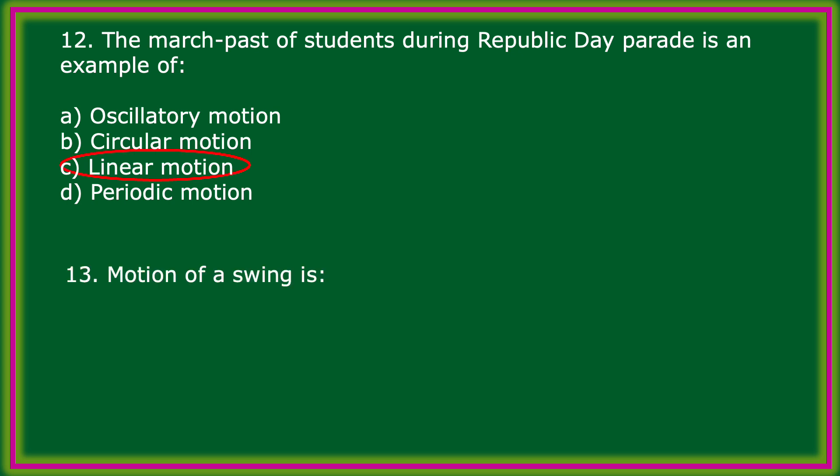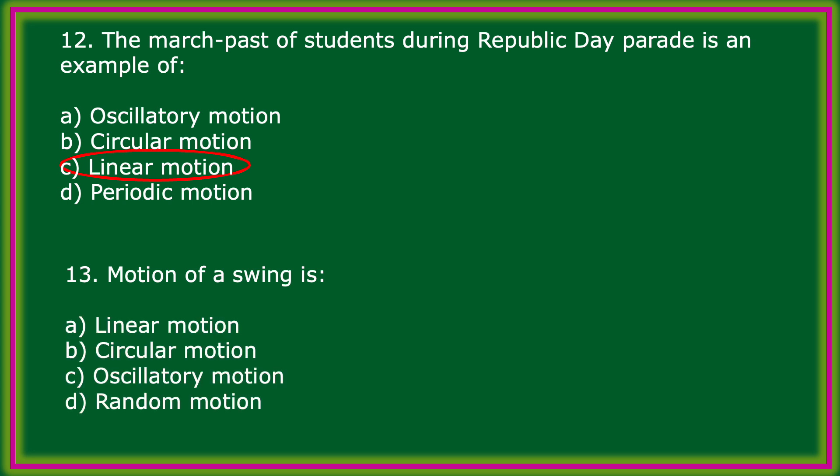Motion of a swing is: linear motion, circular motion, oscillatory motion, or random motion? The correct answer: motion of a swing is oscillatory motion.